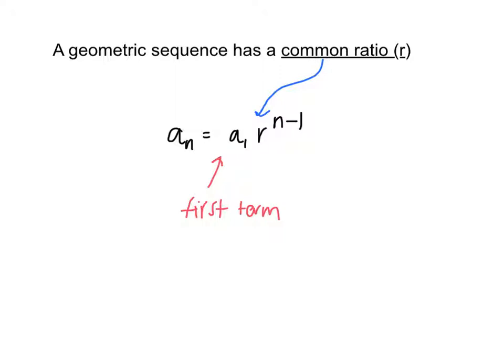So our common ratio is a number that we're multiplying by to get the next number in our series or sequence. So once again, we have a formula and a sub 1, again, is our first term and r is our common ratio.